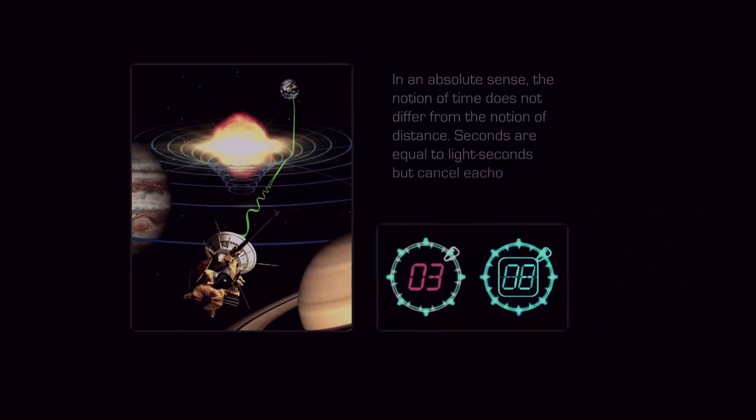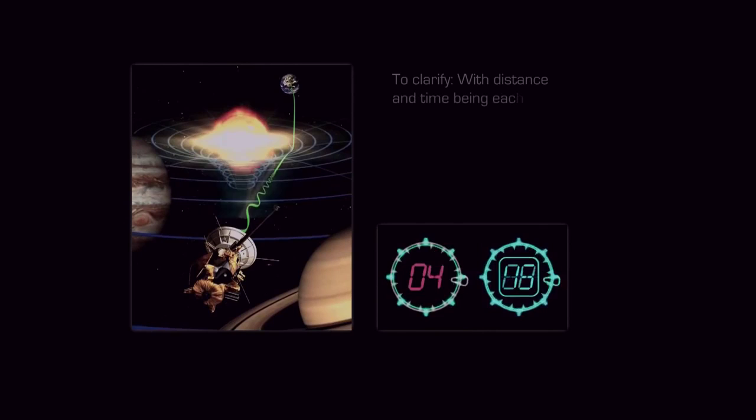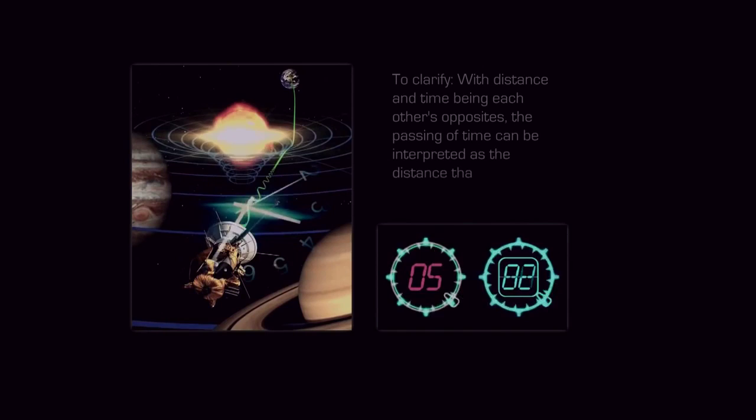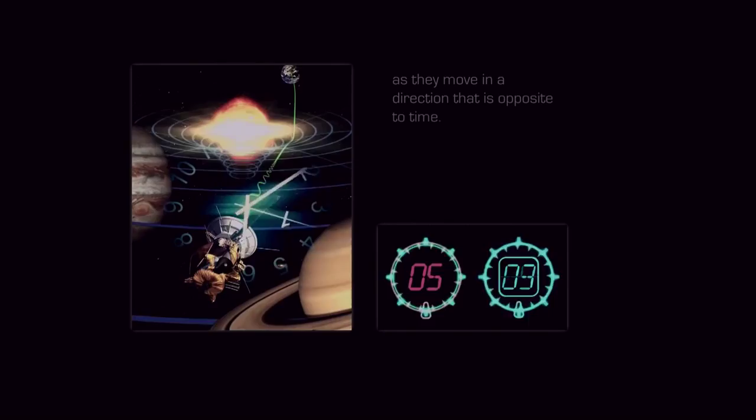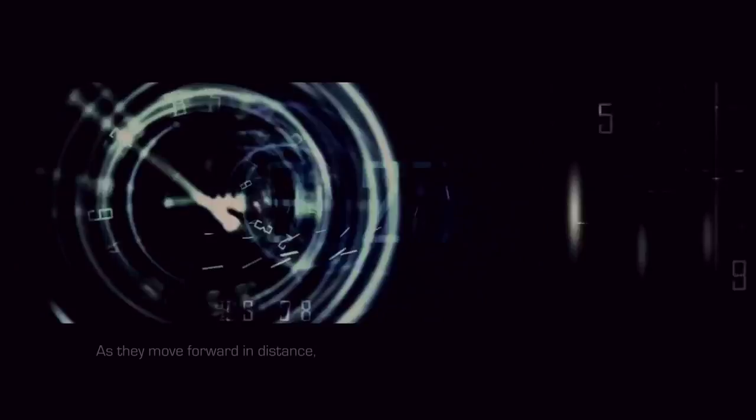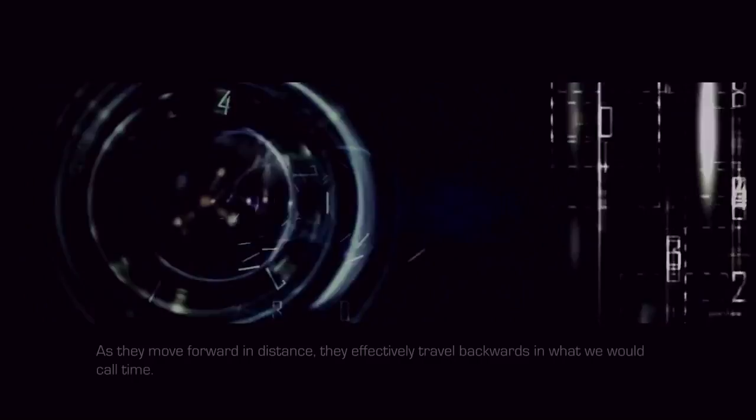Seconds are equal to light seconds but cancel each other out. To clarify, with distance and time being each other's opposites, the passing of time can be interpreted as the distance that the hands of a clock travel as they move in a direction that is opposite to time. As they move forward in distance, they effectively travel backwards in what we would call time. This is also why any single separate minimum unit of experience is always instantly annihilated within a timeless now. This understanding sets the record straight between wavefunction collapse and quantum decoherence.